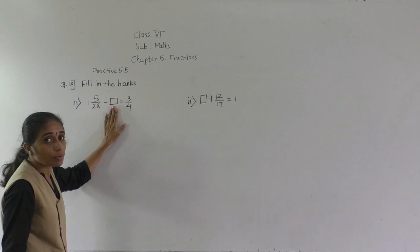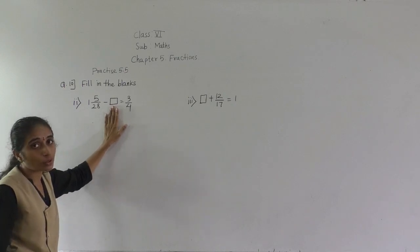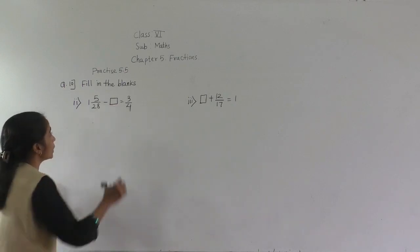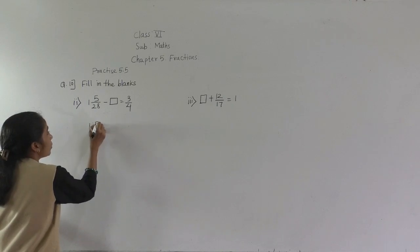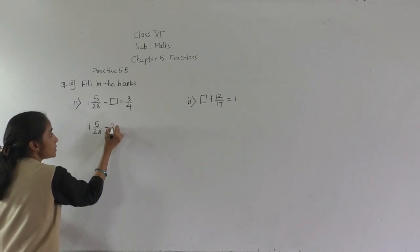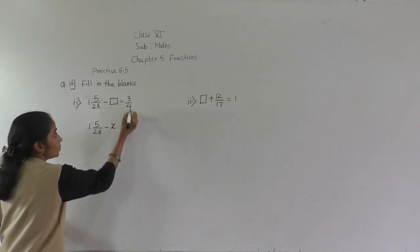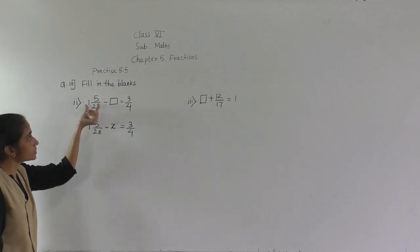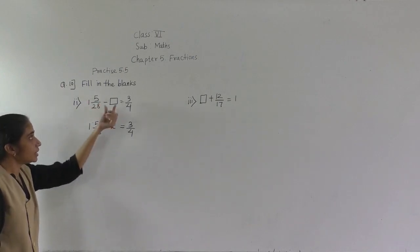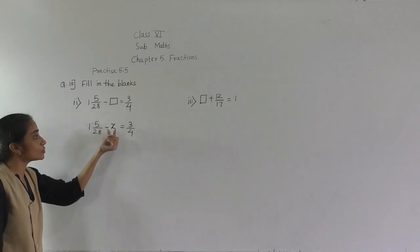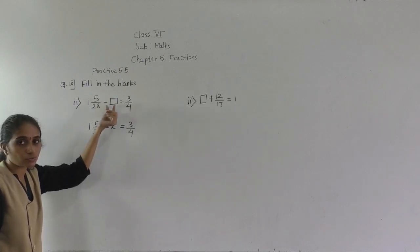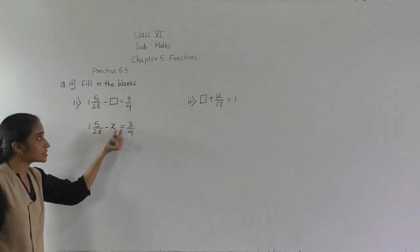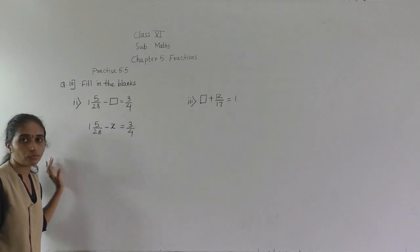So what we'll do — the number which we don't know, we are going to consider it x. In the place of the blank box, I will put x. So minus this blank box means x is equal to 3 upon 4 as it is. This number I have written as it is, minus x, because I have to find the value of this blank box. So I put x is equal to 3 upon 4.